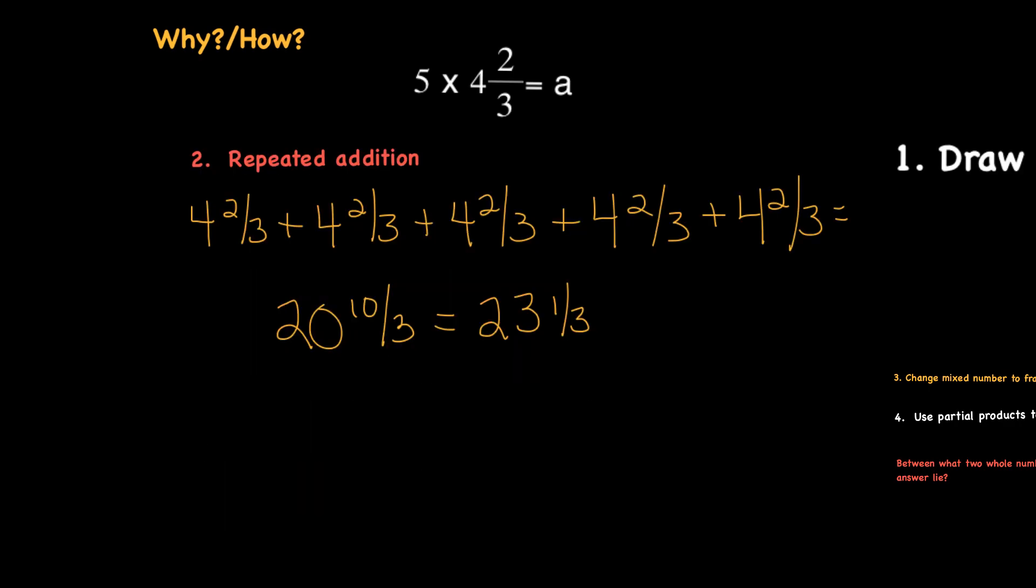Our next method is repeated addition. So we've used this method many times before, but in this instance, we're going to have a mixed number that we are adding. So we've got 4 and 2 thirds plus 4 and 2 thirds plus 4 and 2 thirds plus 4 and 2 thirds.